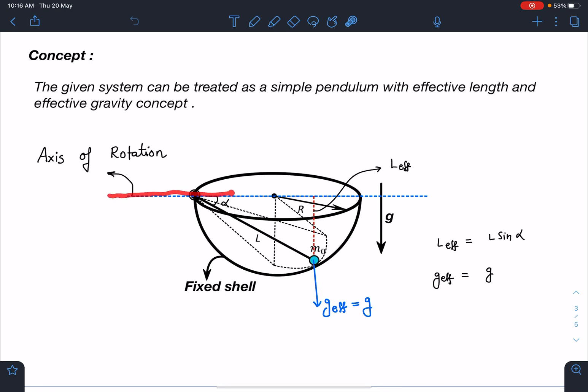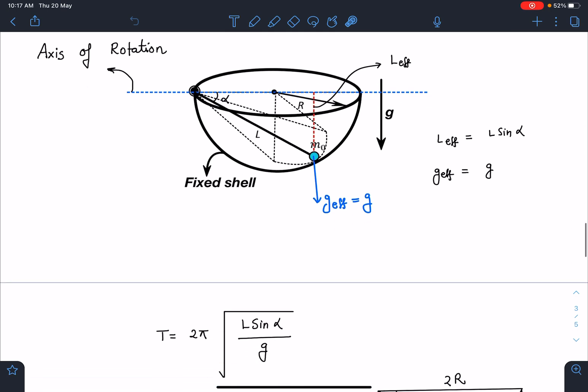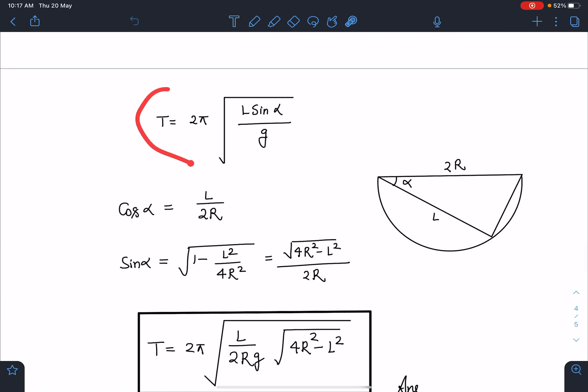If we drop the perpendicular on the axis of rotation, this length is going to be L effective, and the component of g, which is total g itself in this direction, is going to be g effective. The effective pendulum length in this situation is L_eff = L sin α, where α is the angle the rod is initially making with the horizontal. The time period expression is T = 2π√(L sin α / g).